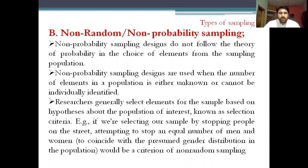For example, if you are selecting a sample by stopping people on the street and attempting to stop an equal number of men and women to coincide with the presumed gender distribution of the population, that would be a criteria of non-random sampling.